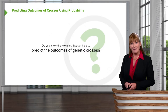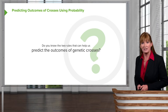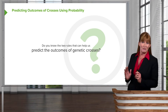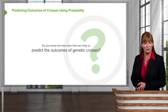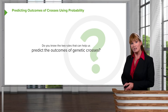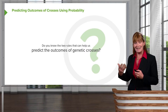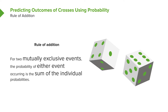Let's begin by looking at probabilities. We can predict the outcome of test crosses using a much simpler method than Punnett squares. Some of us get hooked on Punnett squares, but probability methods are a much more simple way to go about it. We'll take a quick look at two rules: the rule of addition and the rule of multiplication. These rules allow us to turn sentences into mathematical equations.